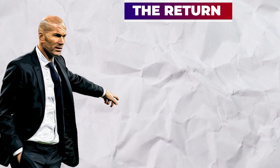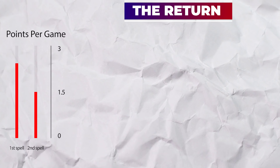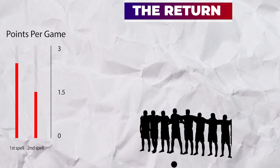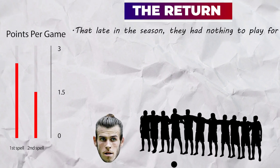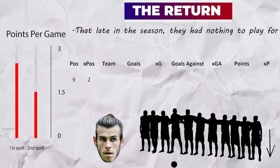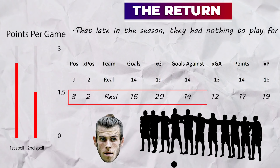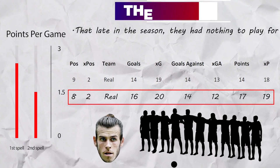And then came the return of Zidane to cap a crazy season. It's fair to say his second spell wasn't nearly as successful as the first — he averaged around 2.28 points per game in his first stint, and that dropped to 1.5 in his second spell. It's hard to assess his changes aside from benching Bale, because the period he came in meant there was not much to play for, so player motivation would have affected results. But it was a poor end to the season, and in fact his 11-game record was almost exactly equal to Lopetegui's spell.